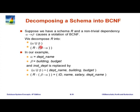So these are the two relations we create. In our example, alpha is department name, beta is building and budget. So for inst-dept, we remove building and budget and create a new relation with department name, building, budget — that is the first relation, alpha union beta. The second one is id, name, salary, and we remove building, budget but retain department name.